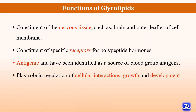What are the functions of glycolipids? These glycolipids are an important constituent of nervous tissue such as the brain and the outer leaflet of the cell membrane. They are constituents of specific receptors for polypeptide hormones. They are antigenic and have been identified as a source of blood group antigens, and they play an important role in the regulation of cellular interactions, growth, and development.